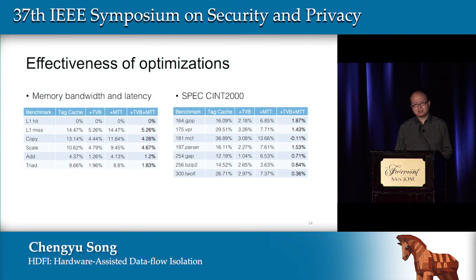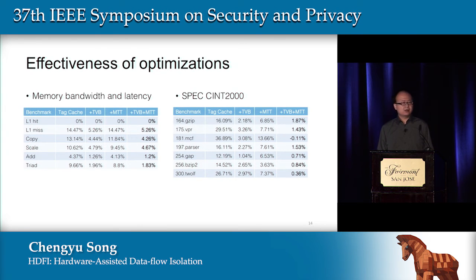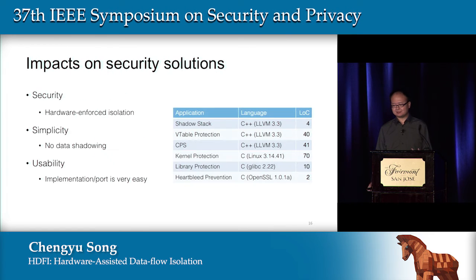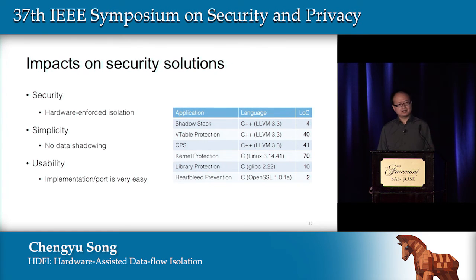For evaluation, we focused on three parts. The first part is the effectiveness of our optimizations. As shown in this table, when combining all three optimizations, the runtime performance overhead introduced by the new hardware feature is actually negligible. In the second evaluation, we tested the security mechanisms we built with synthesized attacks, and as the results show, we can defeat all these attacks. Finally, and most importantly, we evaluated how HDFI improves existing security solutions. In terms of security, being a hardware-enforced isolation mechanism, the security guarantee based on HDFI is much better than most pure software-based isolation mechanisms.